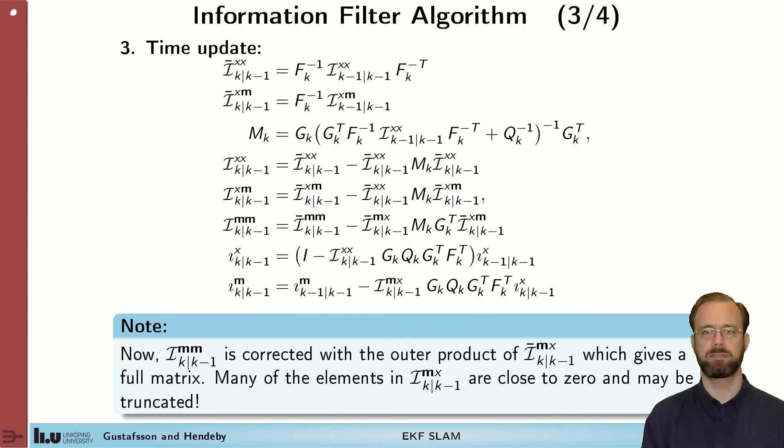Next we have the time update step which is when the measurement update step is easy. The time update step is slightly more involved and costly but not as bad as this first might look. The benefit here is that we know that if something is zero in the information matrix it's not valuable. So we can make truncations with small values and that is one way to gain complexity here. So we improve the complexity of the algorithm by observing that in the information form it's possible to discard small values in a way that's not possible in the Kalman filter form.